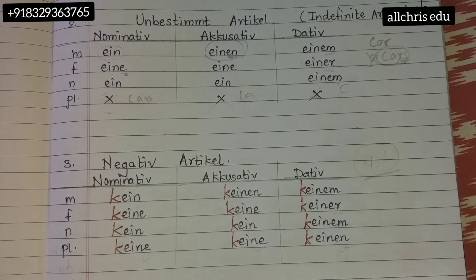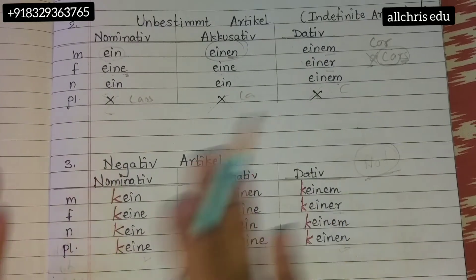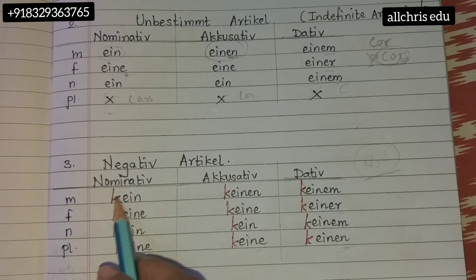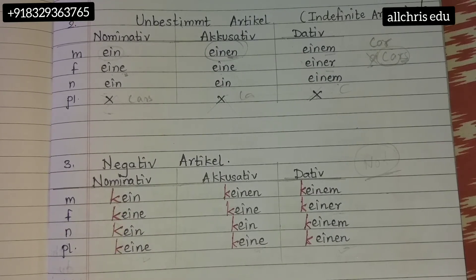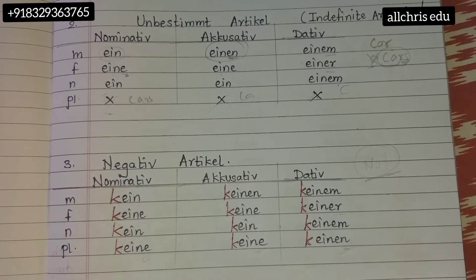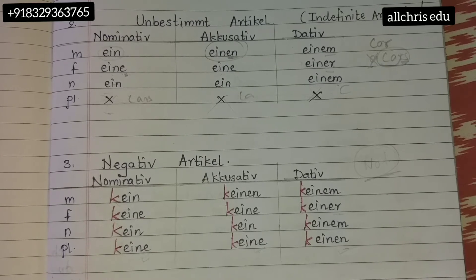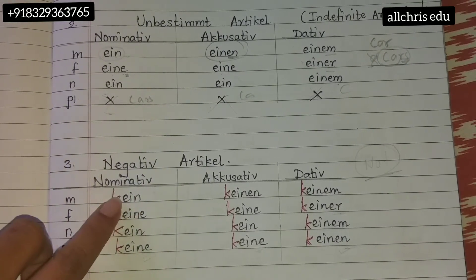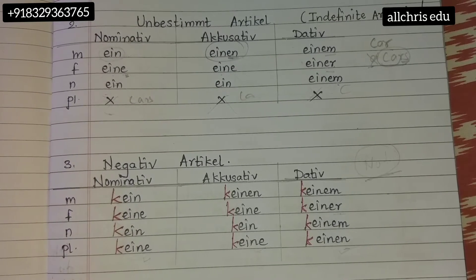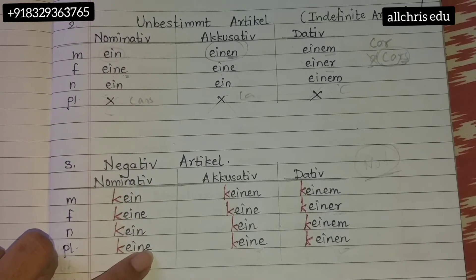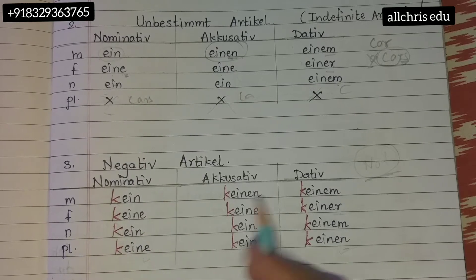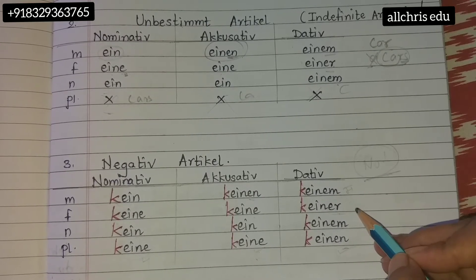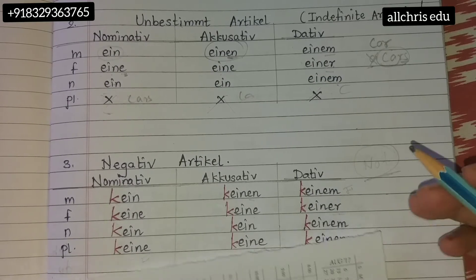If you hide the red color part, you'll find it is exactly similar to the unbestimmter Artikel chart. The only addition is the alphabet 'k' — I've written it with red color intentionally. The chart changes from 'ein' to 'kein.' So kein, kein, keine, keinen, keinem, keiner, keinem, keinen — only one 'k' is added throughout.